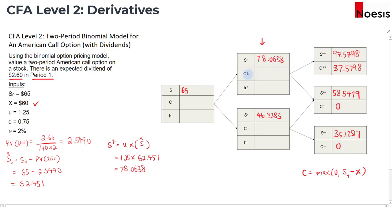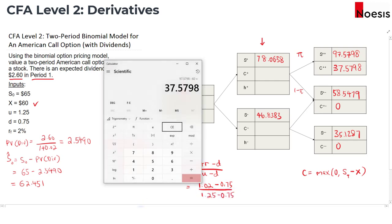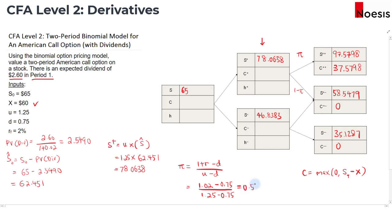We move backwards to calculate C+ and C-, the call option value at period 1. We need the risk-neutral probability of the up move and the down move. The formula is: pi equals 1 plus the risk-free rate minus the down factor, over the up factor minus the down factor. So that's 1.02 minus 0.75 over 1.25 minus 0.75, which gives us 0.54. So the risk-neutral probability of an up move is 0.54 and there is a 0.46 probability of a down move.